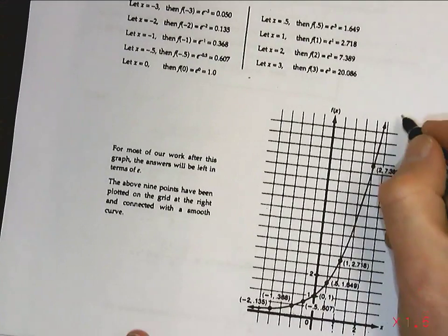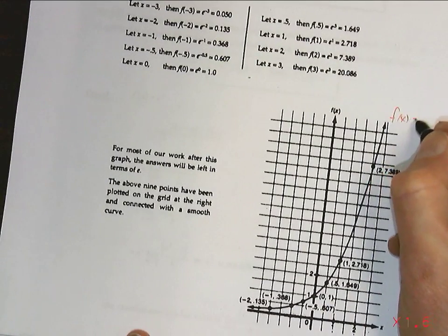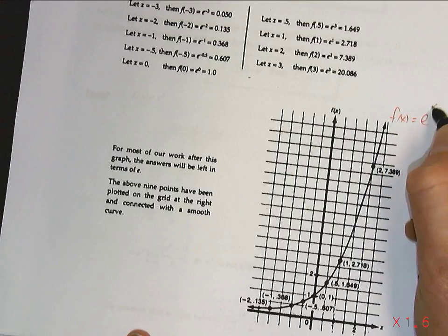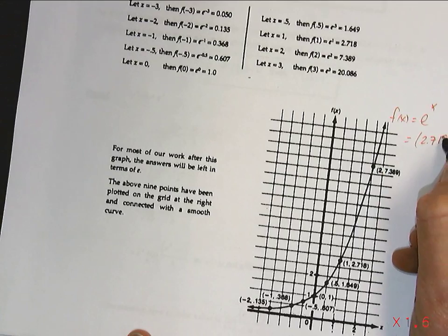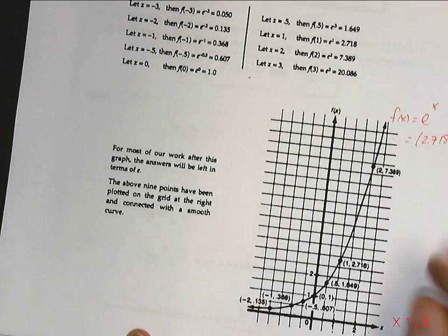And basically, e to the x is a function that has a base of e. So it would be similar to 2.718 to the x.